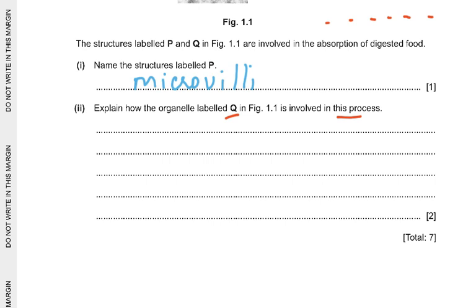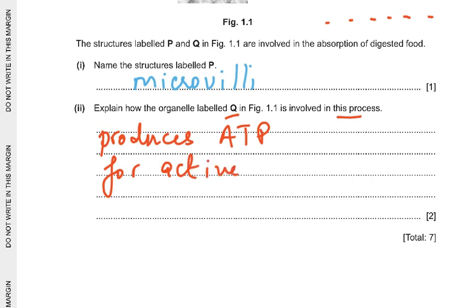You need to explain how mitochondria are involved: they produce or provide ATP, because they are the site of aerobic respiration. ATP is used for active transport. Active transport is the process by which substances are absorbed against the concentration gradient. You cannot say 'produces energy' — that is a reject. For two marks: produces ATP, and ATP is used for active transport.